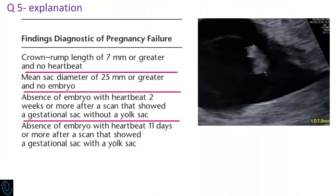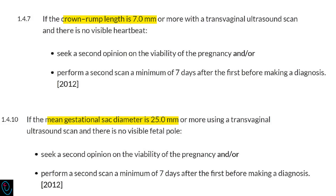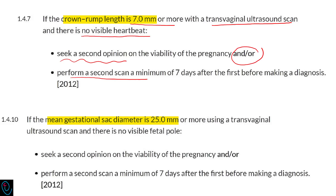Findings diagnostic of early pregnancy failure include a crown-rump length of 7 mm or more with no fetal heartbeats, or a mean sac diameter of 25 mm or more with no embryo. In addition, absence of embryo with heartbeats two weeks or more after a scan showing a gestational sac without a yolk sac, or absence of embryo with heartbeats 11 days or more after a scan showing a gestational sac with a yolk sac. According to NICE guideline, if the crown-rump length is 7 mm or more on transvaginal ultrasound with no visible fetal heartbeats, seek a second opinion and/or perform a second scan minimum of 7 days after the first one before making a diagnosis.